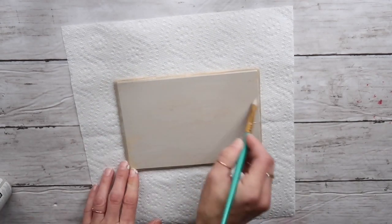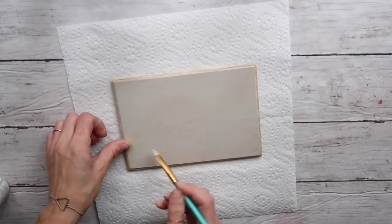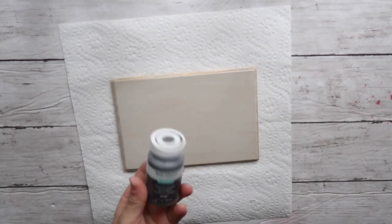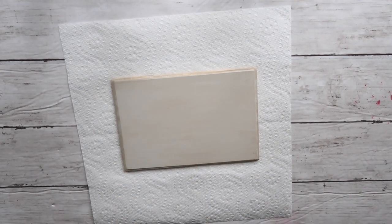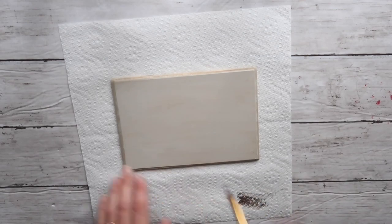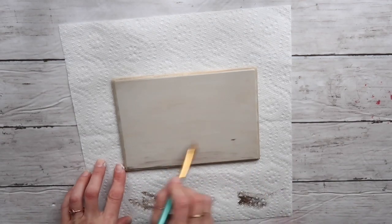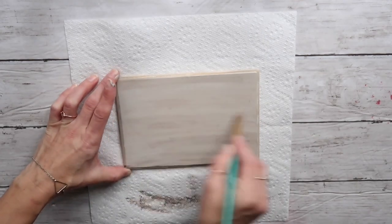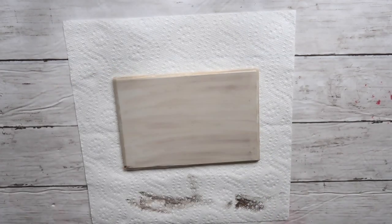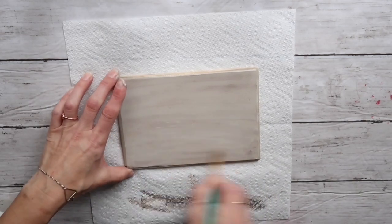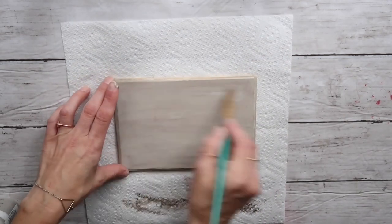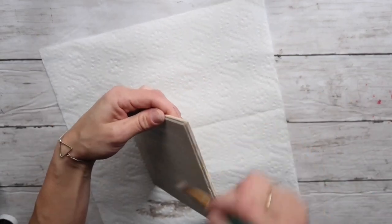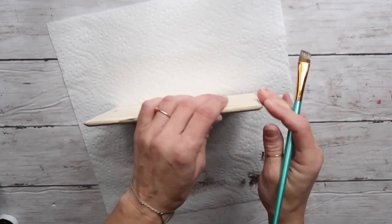Before it was completely dried, I took the Waverly chalk paint in color Truffle and started adding it to this wood plaque. I started distressing it with that Truffle paint. Because the previous paint was not completely dried, it didn't really distress - it actually just blended with the previous paint. I really like how it turned out. I think it's a really unique technique that created a very beautiful pattern. I did the same thing all the way around the edges as well.